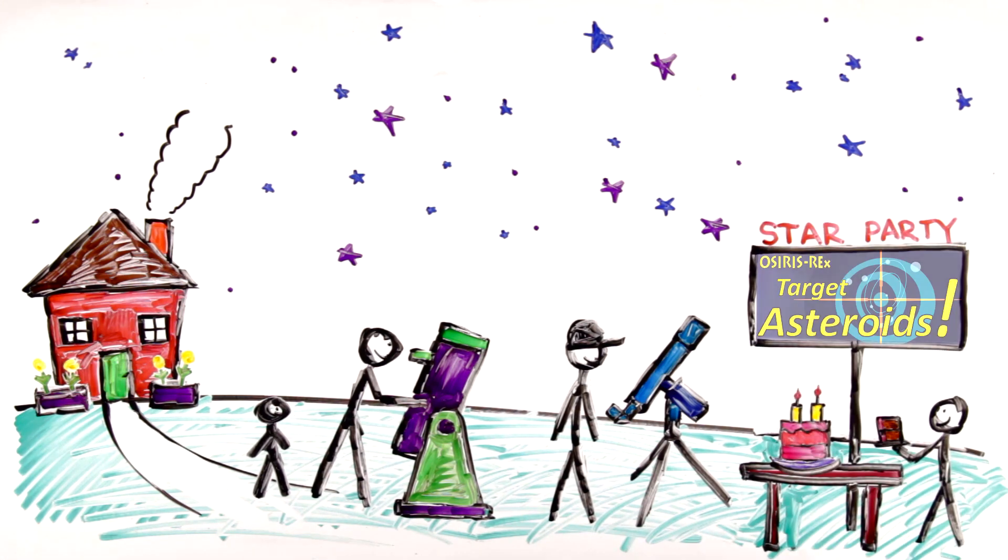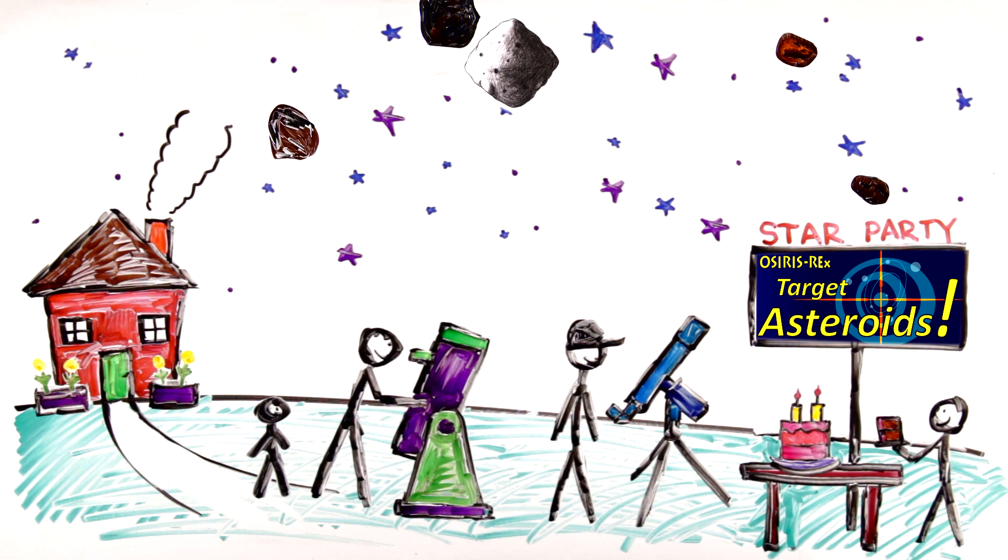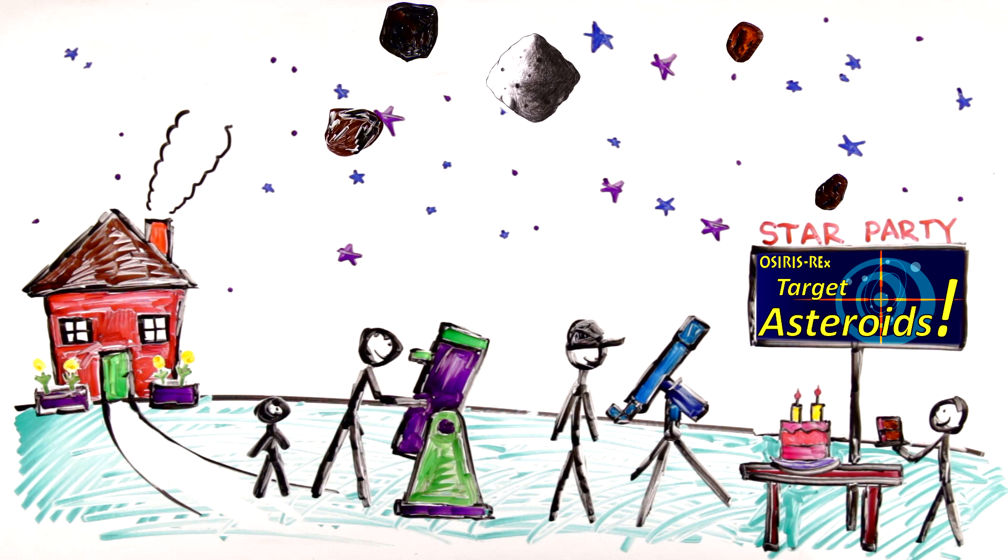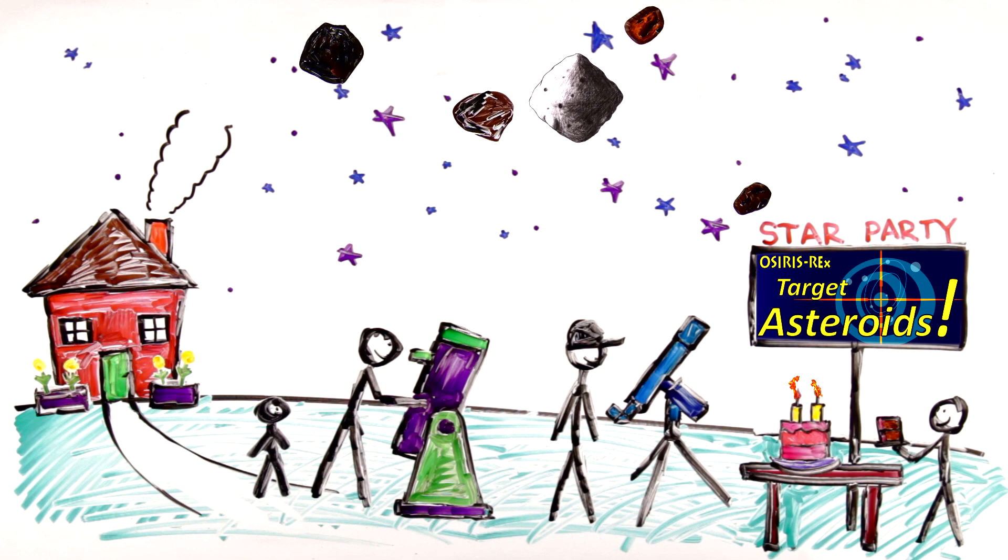The OSIRIS-REx missions Target Asteroids is a citizen science program in which observers collect data on asteroids to understand near-Earth asteroids, Bennu, and possible targets for future missions. It celebrates two years of observing in April 2014 with over 200 observers.